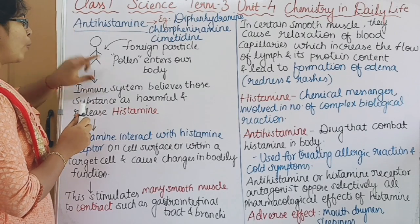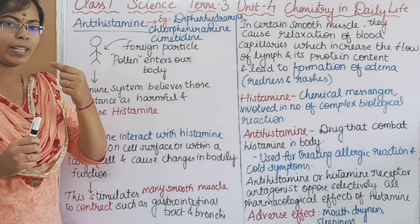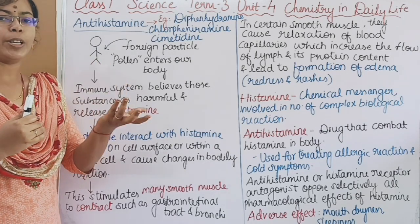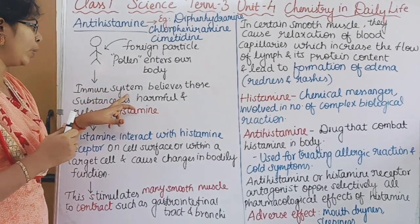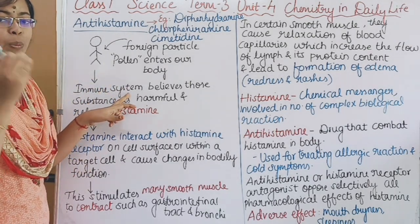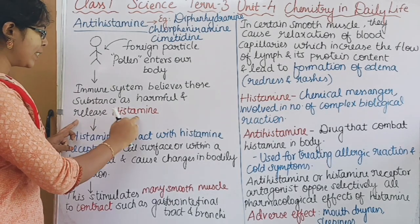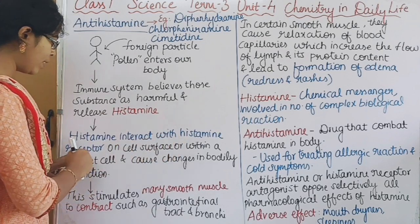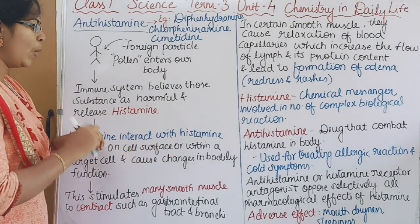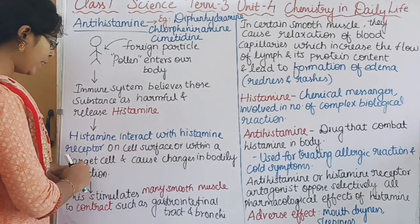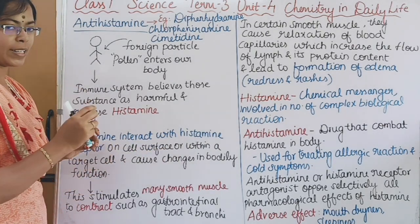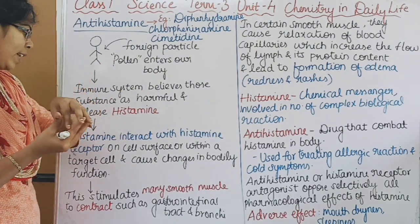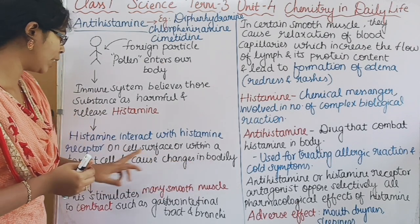In our body, when foreign particles enter through the nose, our immune system will release histamine. The histamine then goes and interacts with the histamine receptor. The histamine receptor is located on the surface within the target cell and is a key substance.